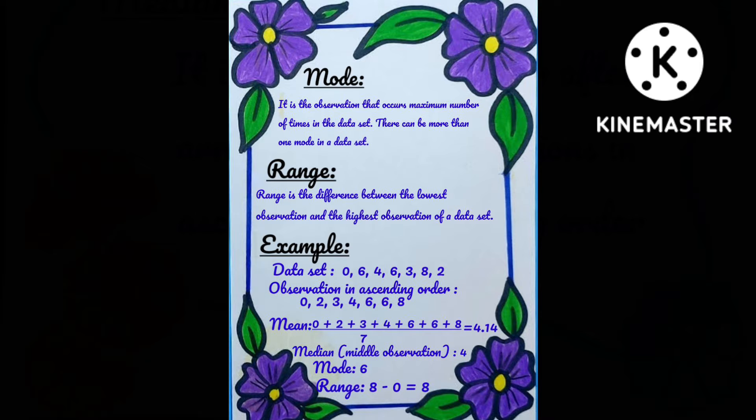Then example data set. Here is the raw data, after then the data is organized in ascending order, means in increasing order from 0 to 8. After it, the example of mean. Here is the ascending order of the numbers divided by the quantity of numbers equals the result, means the answer of the division.